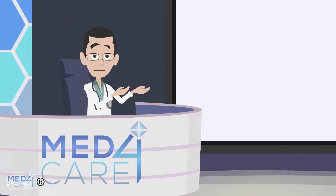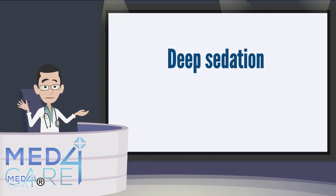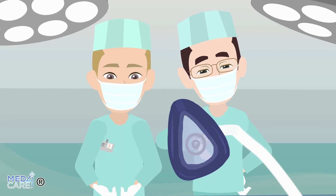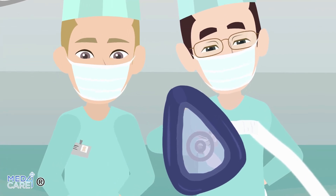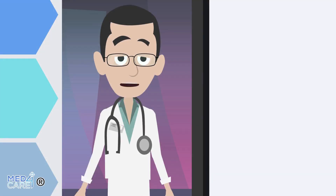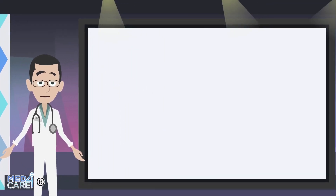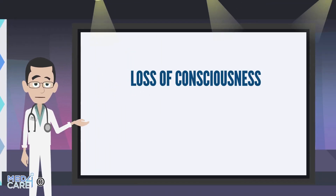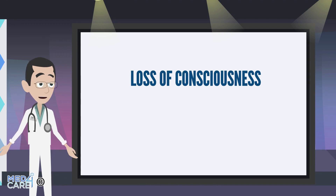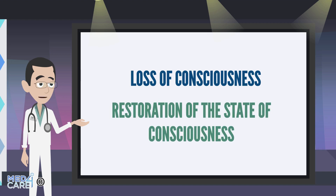What are the differences between deep sedation and general anesthesia? Deep sedation provides that the patient sleeps and dreams, but if necessary, with a tactile stimulus or an intense call can be awakened. With general anesthesia, on the other hand, sleep is much deeper and one cannot wake up. During general anesthesia the patient completely loses the state of consciousness, while with deep sedation the artificially induced state of depression of consciousness can be restored, at least partially, by intense tactile or pain stimulation.